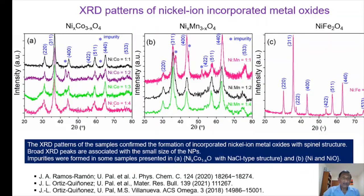However, when the nickel-to-cobalt ratio is increased — for example, to 1:2 — apart from the spinel peaks, we got some extra peaks at positions around 64° and 44°. These peaks correspond to nickel cobalt (1-x)O, which is also a nickel cobalt oxide but has a non-spinel phase; it has a sodium chloride-type structure, quite different.